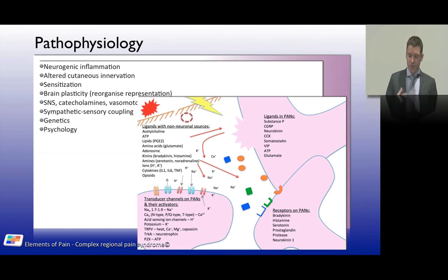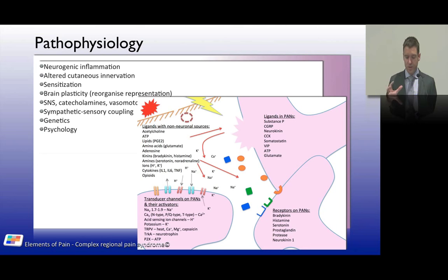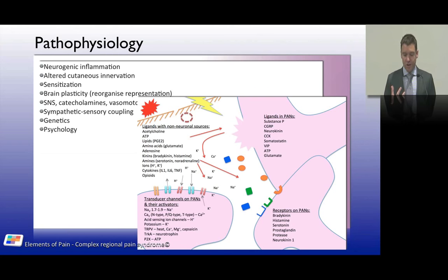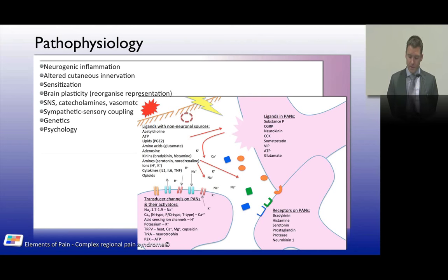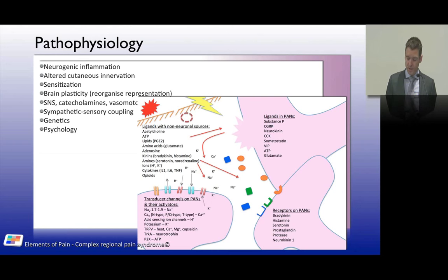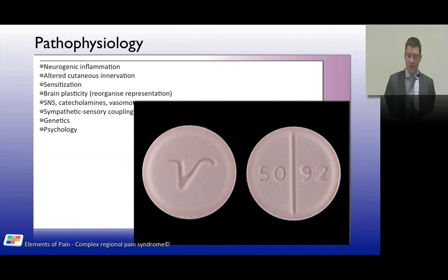Regarding inflammation: following peripheral tissue trauma, inflammatory ligands are released from non-neuronal sources — bradykinin, histamine, serotonin — and from within nerve cells, including substance P and CGRP. Cytokines like interleukin-1, interleukin-6, and tumor necrosis factor are key. These interact with receptors and transducer channels on primary afferent neurons. There is evidence that prednisolone can be useful in treating CRPS in some cases.